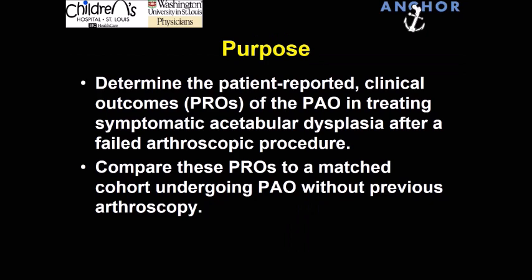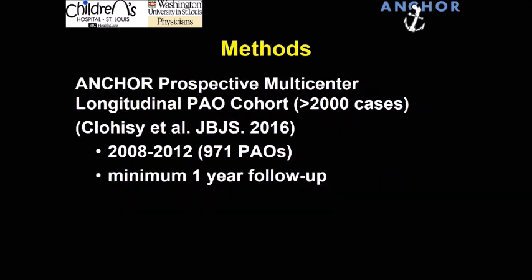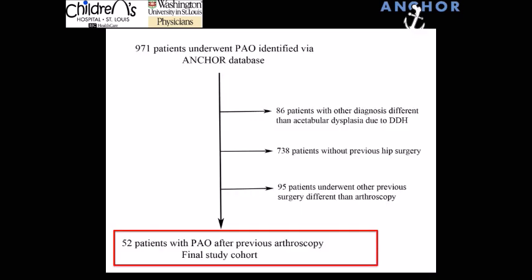Our purpose is to determine the patient-reported outcomes of the PAO in treating symptomatic acetabular dysplasia in patients that have failed arthroscopic treatment, and then compare these PROs to a matched cohort undergoing PAO without previous surgery. In terms of methods, we looked at our ANCHOR prospective multi-center cohort. This cohort is now over 2,000 cases. For this study, we looked at the first 971 PAOs to identify patients that had previous failed arthroscopy, with a minimum one-year follow-up.